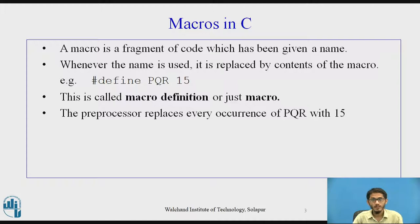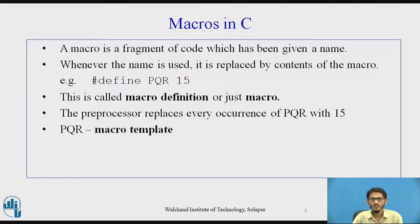So what does the pre-processor do? It replaces every occurrence of the macro pqr in the program with the value 15. Therefore, pqr is the macro template and 15 is its expansion — the value that will be replaced for pqr.